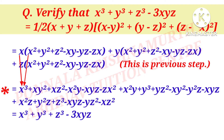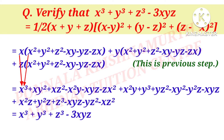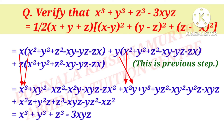Expanding: x·x² = x³, x·y² = xy², x·z² = xz², x·(−xy) = −x²y, x·(−yz) = −xyz, x·(−zx) = −zx². Then y·x² = x²y, y·y² = y³, y·z² = yz², y·(−xy) = −xy², y·(−yz) = −y²z, y·(−zx) = −xyz.